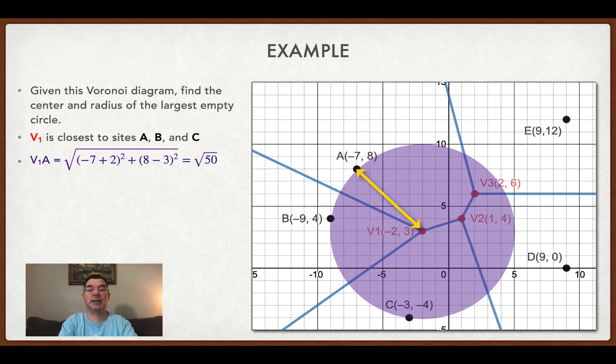So I just use a distance formula between vertex 1 and I just randomly chose site A and the distance there is the square root of 50, which is like seven point something.